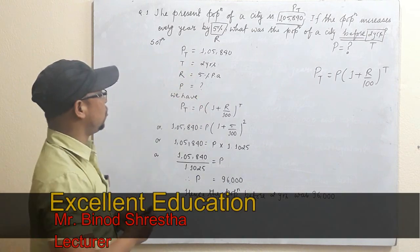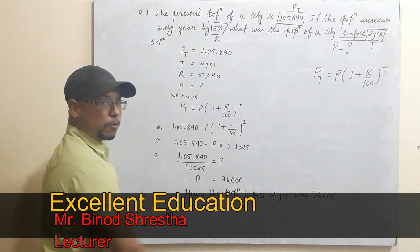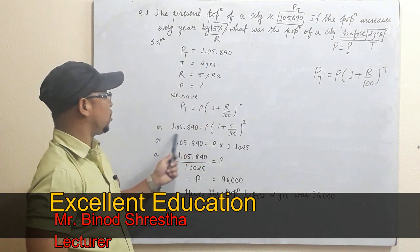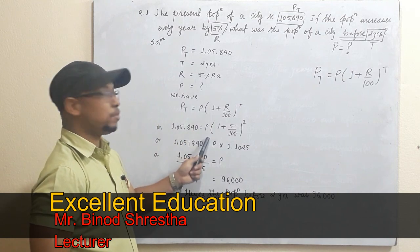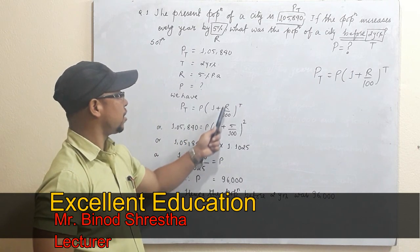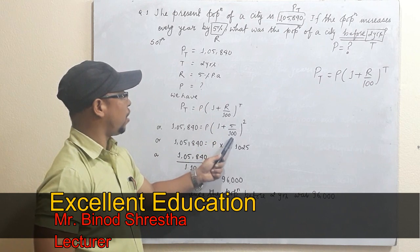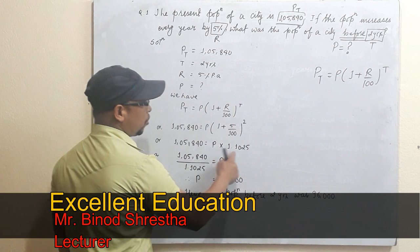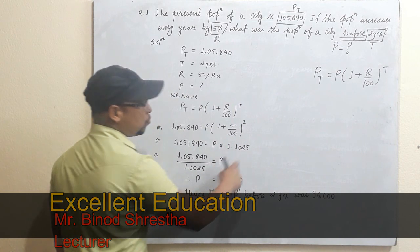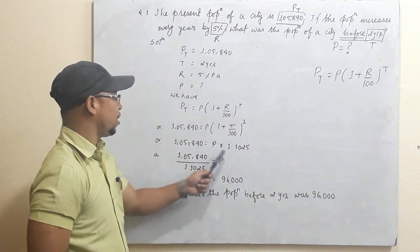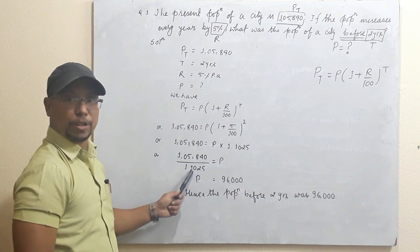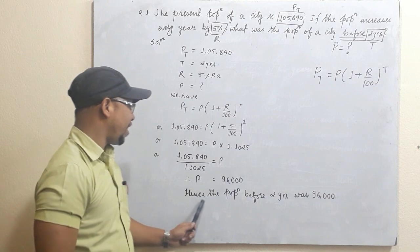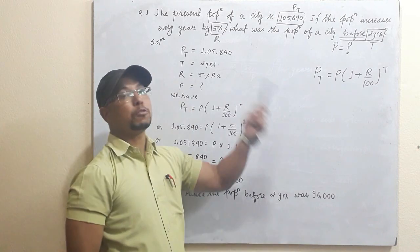So PT equals one lakh five thousand eight hundred forty, P is what we need to find, time T is two years, and R equals five percent. Substituting into PT equals P times (1 + 5/100) to the power 2, if you calculate this in your calculator you get 1.1025. So P equals PT divided by 1.1025, which gives P equals ninety-six thousand.